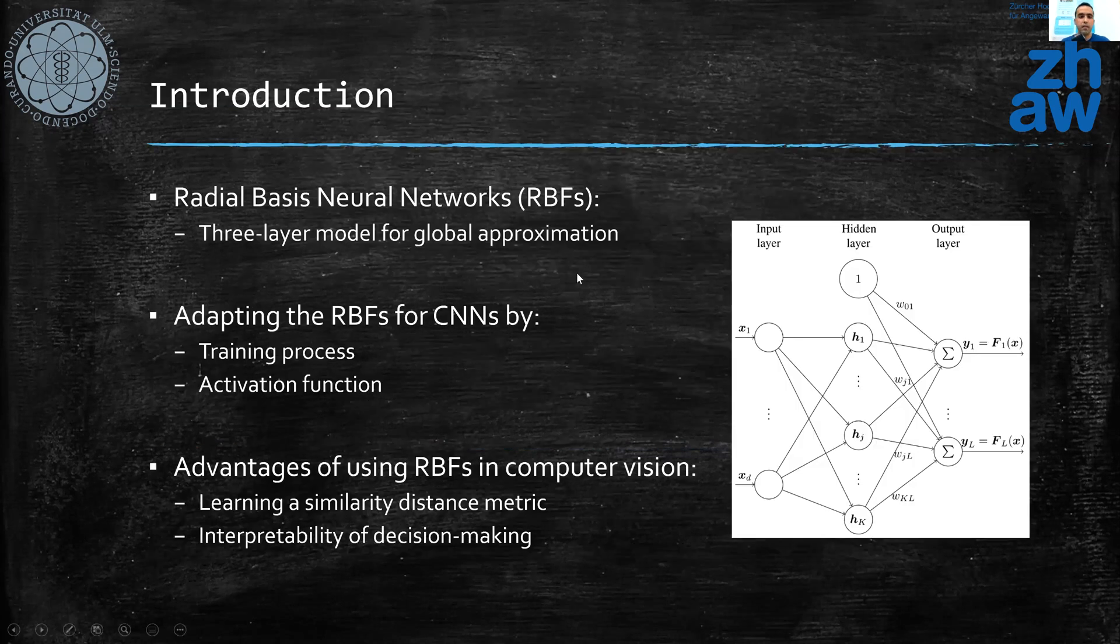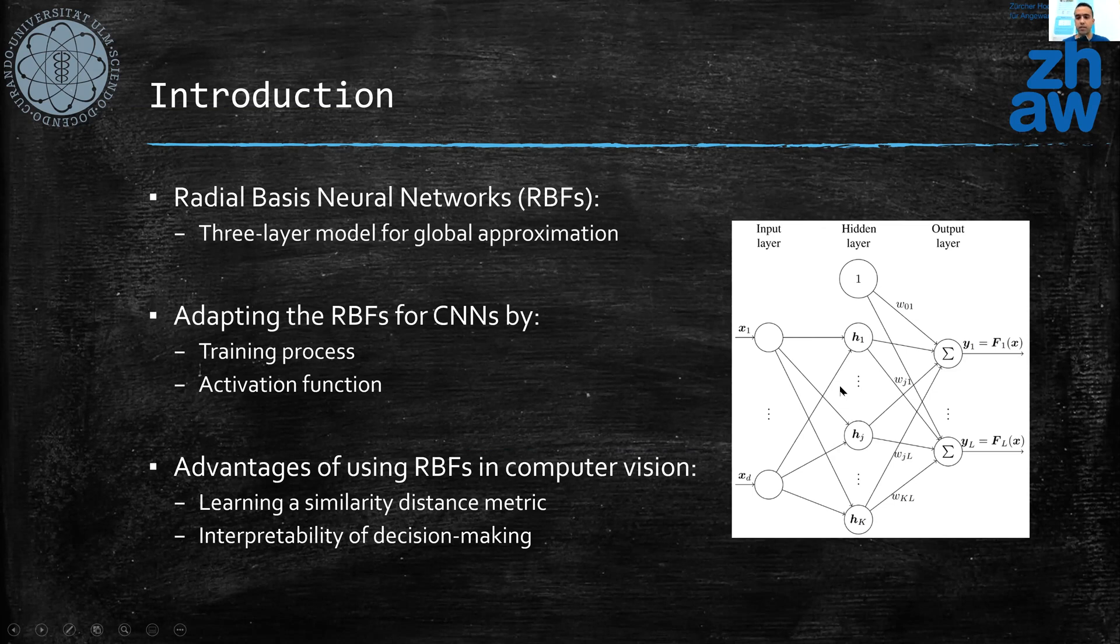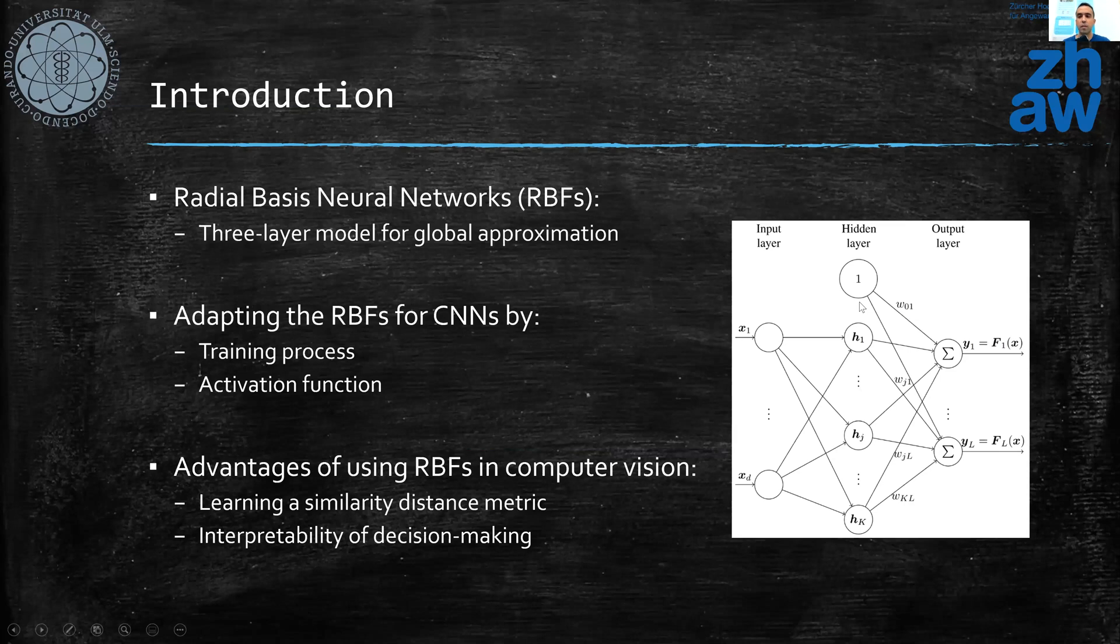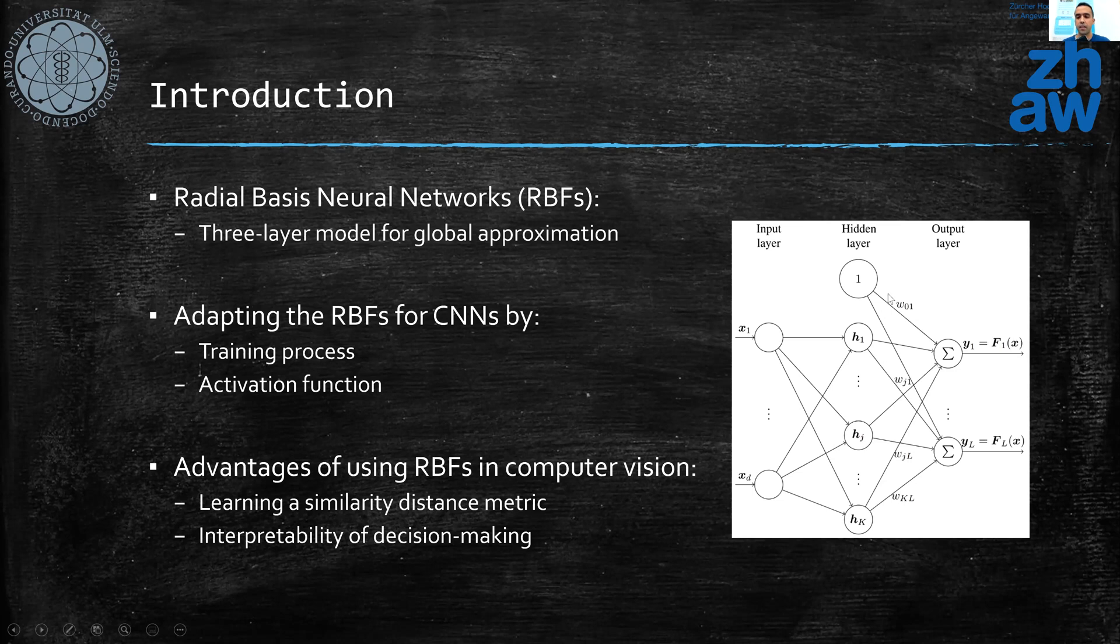The radial basis function neural networks are three-layer neural networks. They have been introduced first in 1988. For a given input feature vector in the forward path, first we compute the distances of these features to some cluster centers which are encoded in the hidden layer, and afterwards we apply an activation function to these distances and then train an output weight in order to specify the classes.